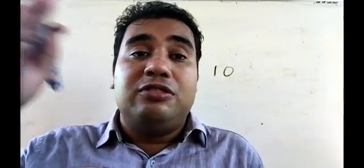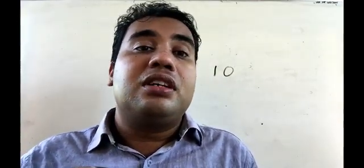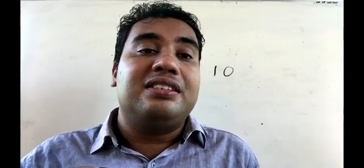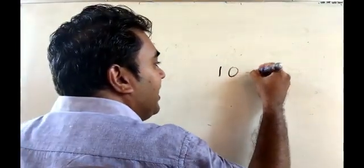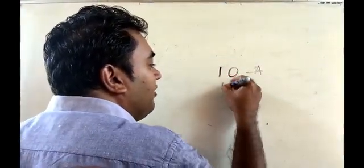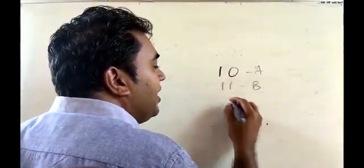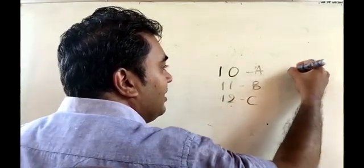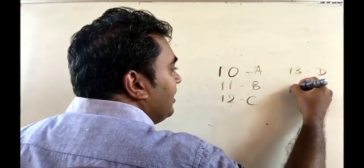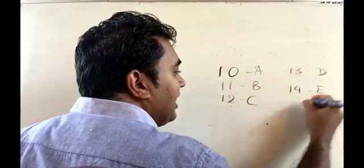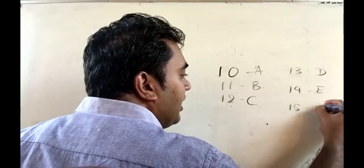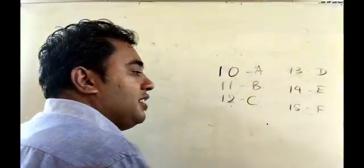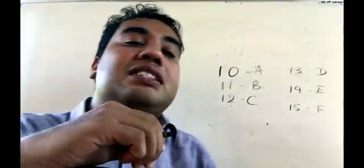The solution is that for numbers from 10 to 15, we use capital letters from the English alphabet. For 10 we use capital A, for 11 we use capital B, 12 is capital C, 13 is capital D, 14 is capital E, and 15 is capital F. Those are the digits used in the hexadecimal number system — 0 to 9 and then A to F.